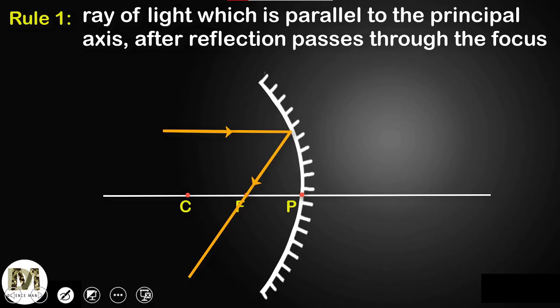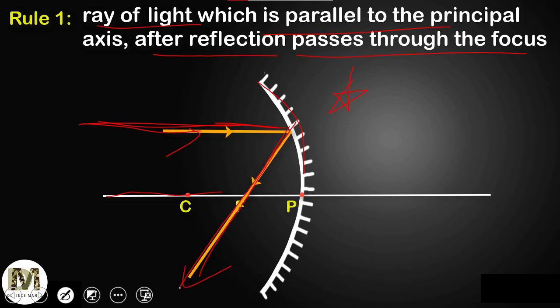Before proceeding to cases, there are some rules of reflection for the concave mirror you need to know — only then can you solve questions. Rule number one: a ray of light parallel to the principal axis, after reflection, passes through the focus. So any ray coming parallel to the principal axis will, after hitting the mirror, pass through the focus. If a ray comes from infinity, it will go to the focus. Please remember this very important rule.